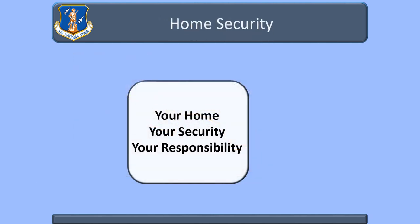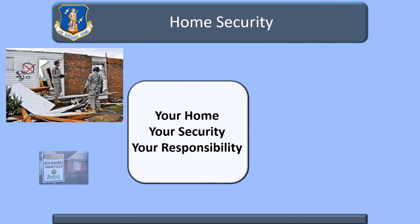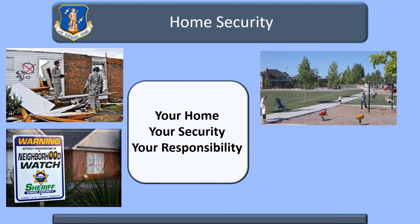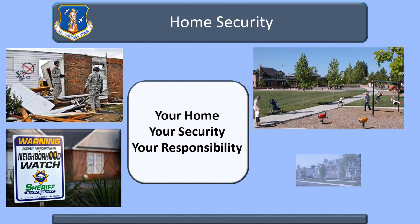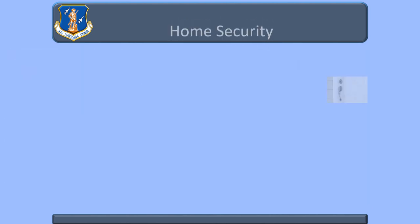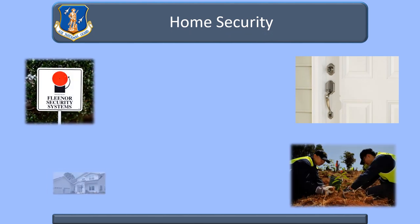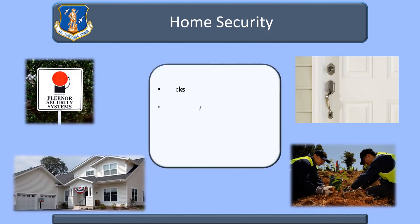When looking for housing, look for areas with low crime, buildings or houses with good security features, good lighting, and a view to the street. If you discover security concerns, talk to your landlord about getting them fixed. Consider locks, shrubbery, lighting, and security systems. If you are the owner, consider making the improvements yourself.